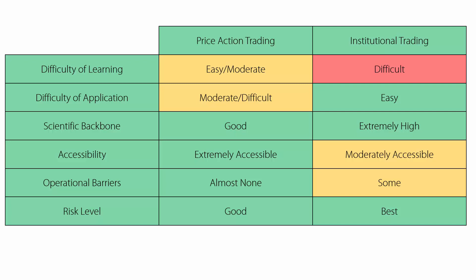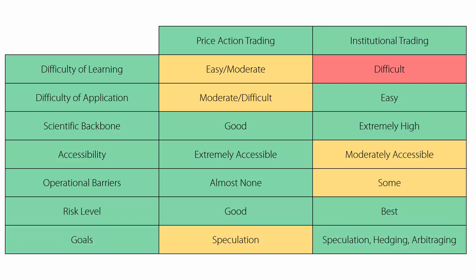The last parameter is the goals you can have with each method. With price action trading, you can only speculate in the market. With institutional trading techniques, you can speculate, arbitrage, and hedge — so there is a wider range of possibilities. As you can see, both methods have advantages and disadvantages. It's a matter of what suits your personality best and how you deal with risk that is going to determine which path you're going to take.